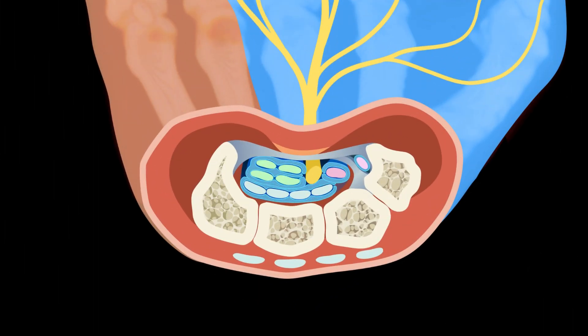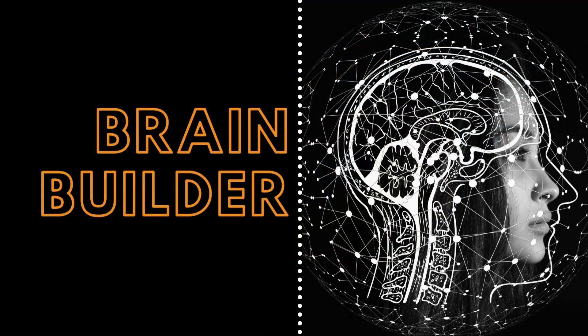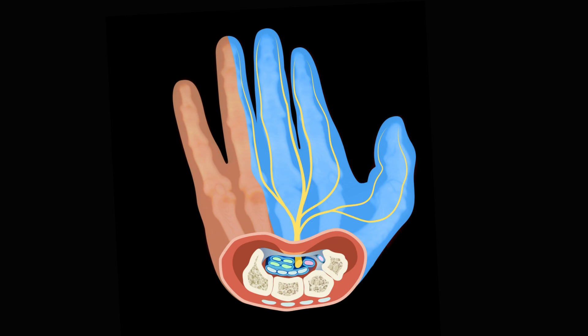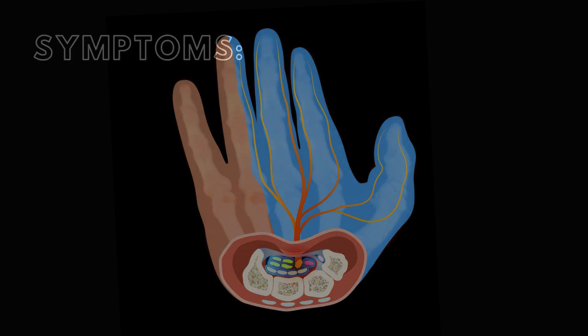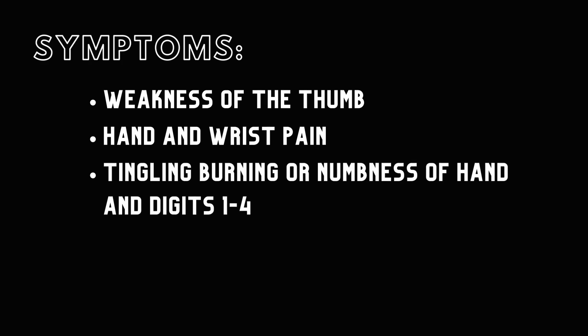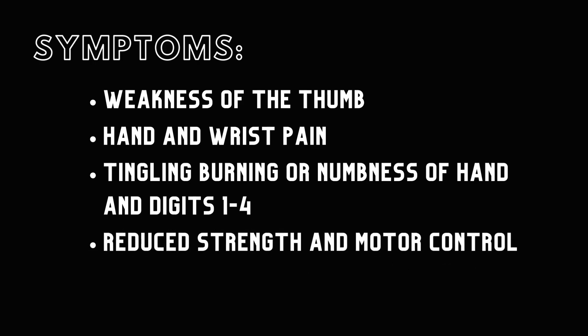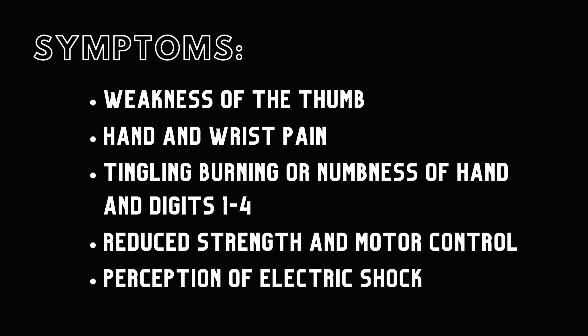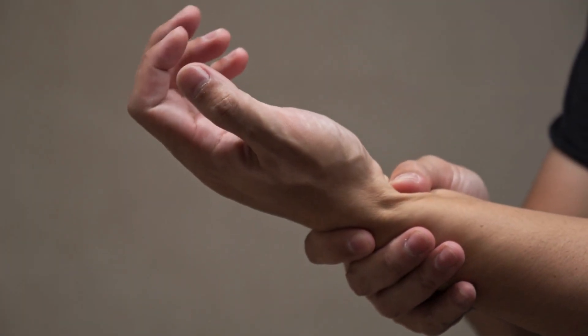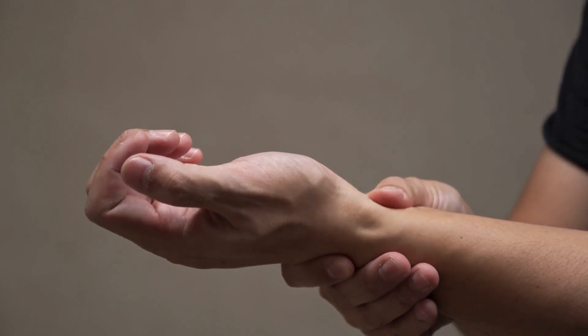What happens when the median nerve gets compressed? Symptoms of carpal tunnel syndrome are all associated with the sensory or motor functions of the median nerve. Symptoms may present as weakness of the thumb, hand and wrist pain, tingling, burning, or numbness of the hand and digits one through four, reduced strength and motor control of the hand, and even the perception of an electric shock through the wrist and hand. Actions such as flexing the wrist increase pressure on the median nerve, enhancing the pain.